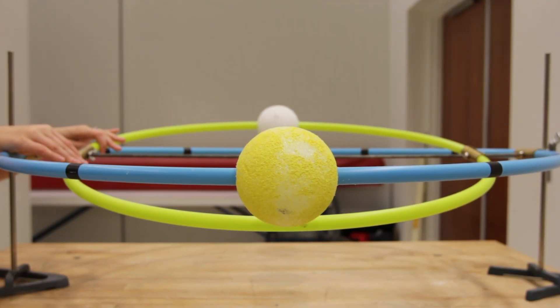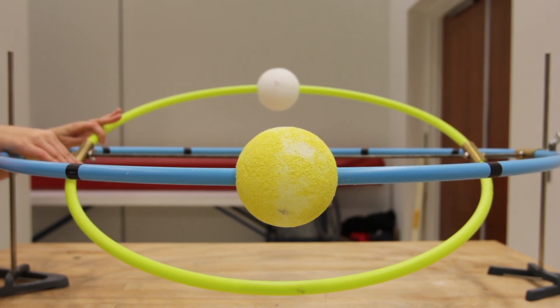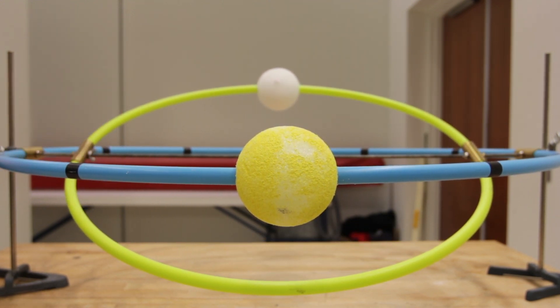Thus, typically, at full moon, the moon is too far above or below the plane of the ecliptic to pass through Earth's shadow and result in a lunar eclipse.